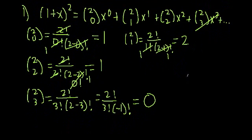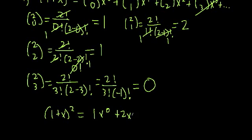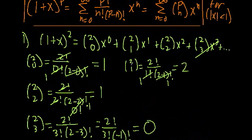So now let's plug in what we know from our factorial terms. We get that 1 plus x squared is equal to 1 times x to the 0, plus 2 times x to the first power, plus 1 times x squared, which is just 1 plus 2x plus x squared. So it's a result we already know, but it's handy to show what happens when p is a positive integer and how the series terminates.